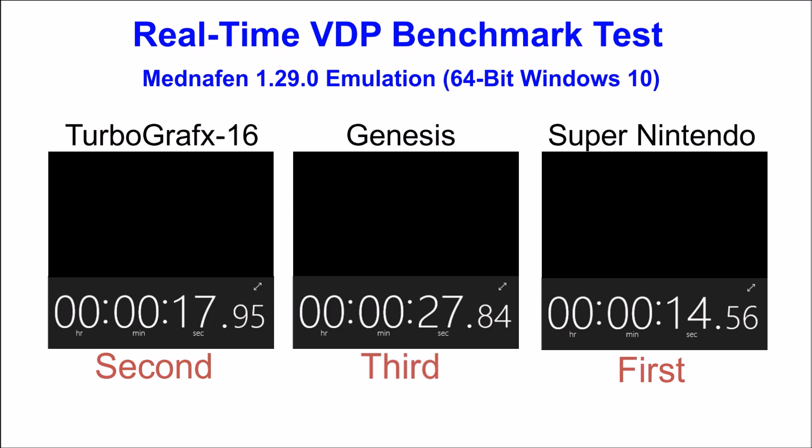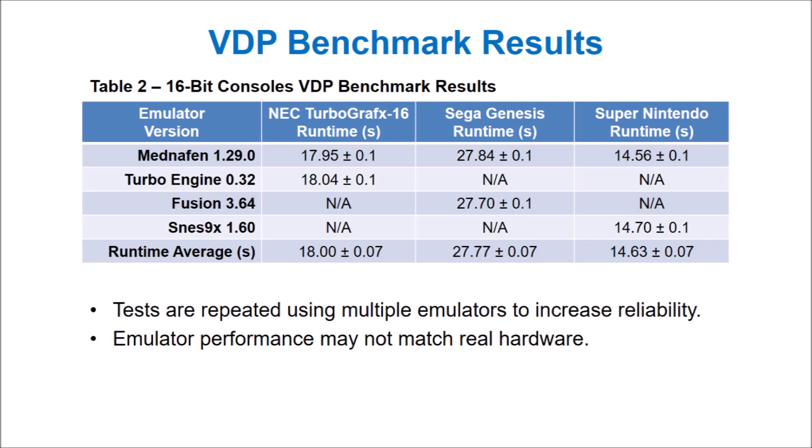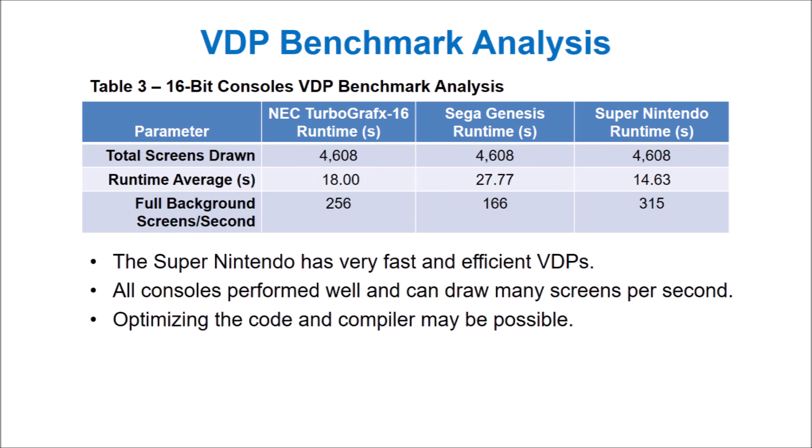Wow, I think the results this time are even more surprising than the previous benchmark test. I was sure that Genesis would win this round and I didn't expect the Super Nintendo to be this fast. I repeated the test using multiple emulators and the results are summarized in Table 2, giving us more certainty that the results are likely similar to running on real hardware. The Super Nintendo has very efficient video display processors — even though it has the slowest CPU and VDP clock speeds, it appears to require very few clock cycles per instruction. The TurboGrafx-16 wasn't far behind, which is especially surprising as it requires two write operations to transfer 16 bits of data with its 8-bit CPU. The Genesis struggled with the quadruple nested for loop, and there's likely a more efficient way to optimize its performance.